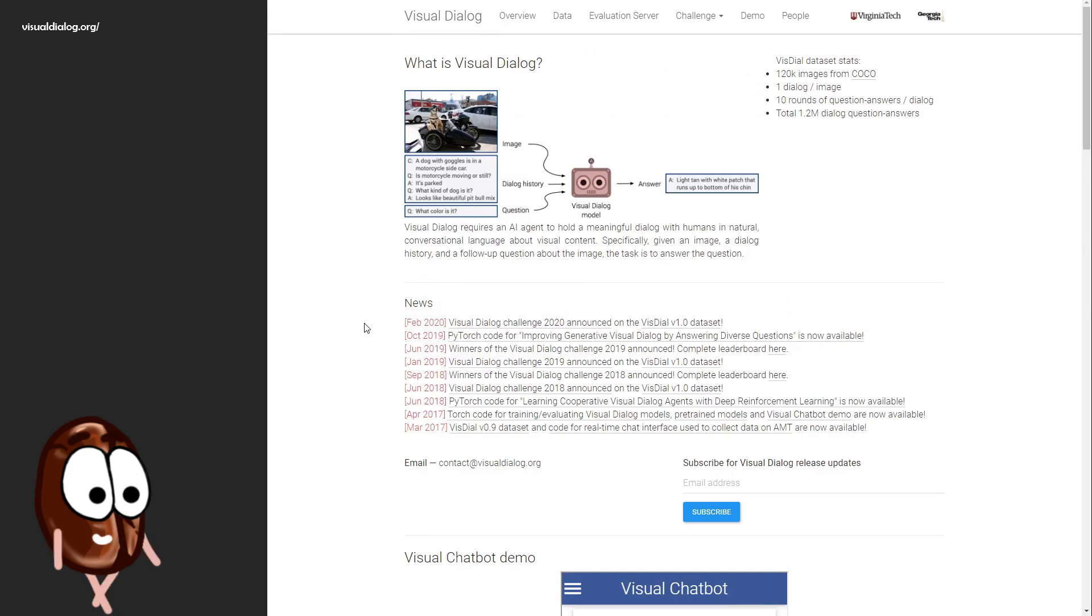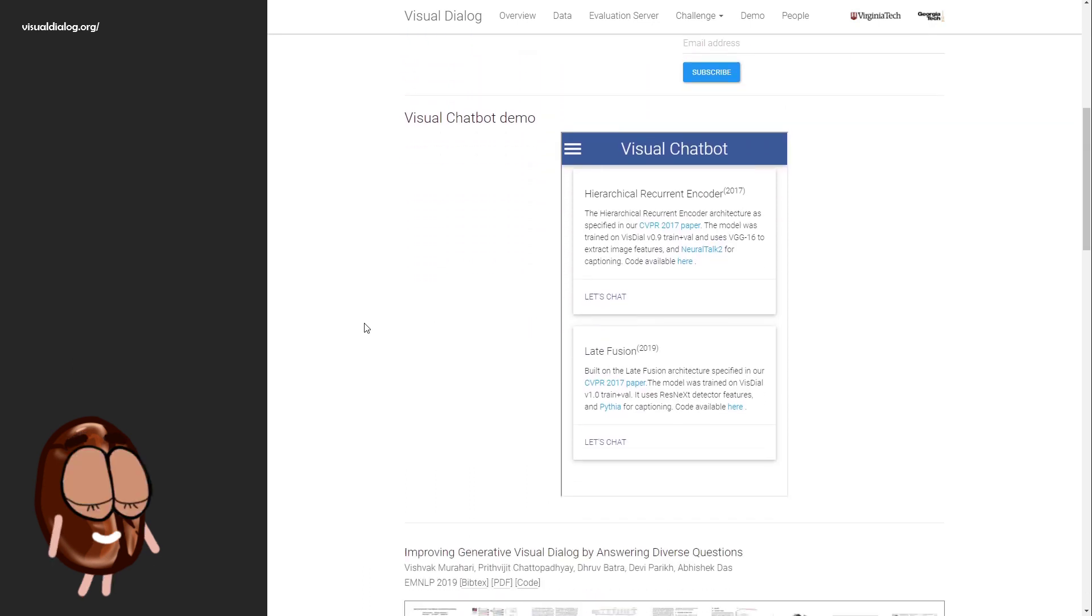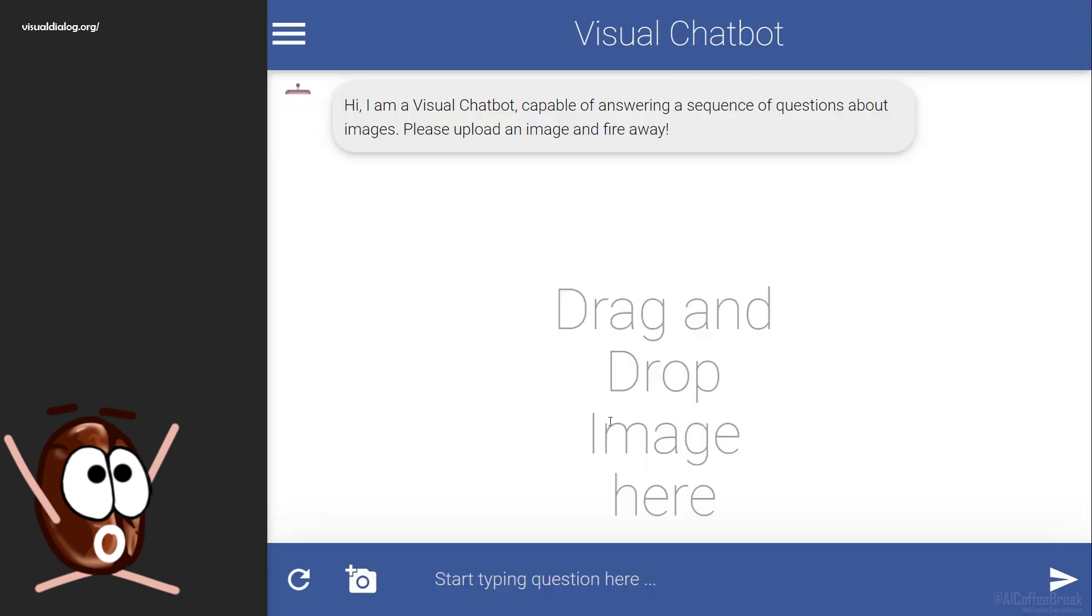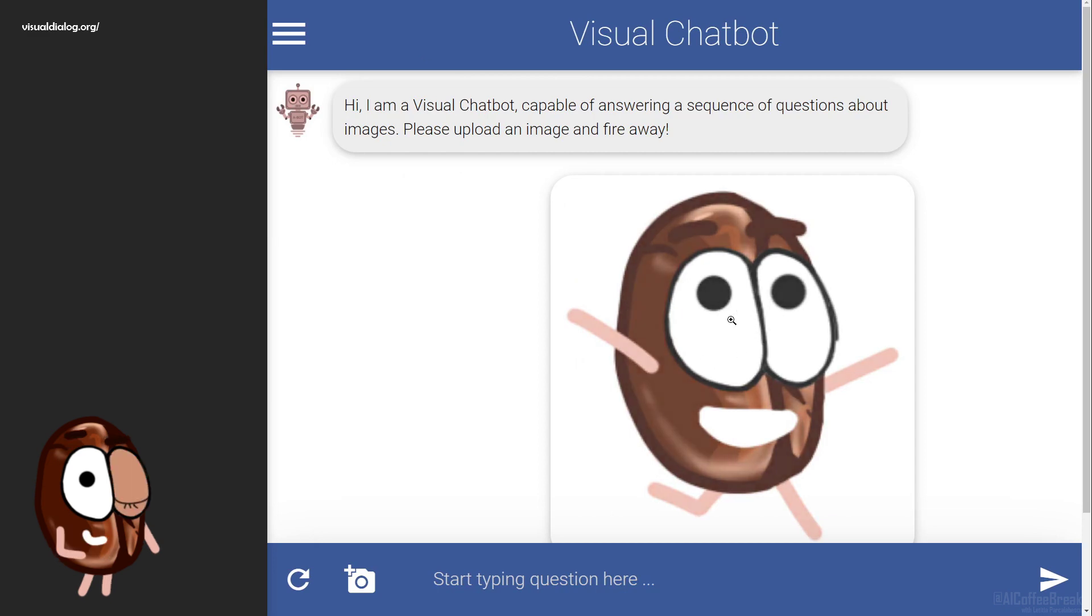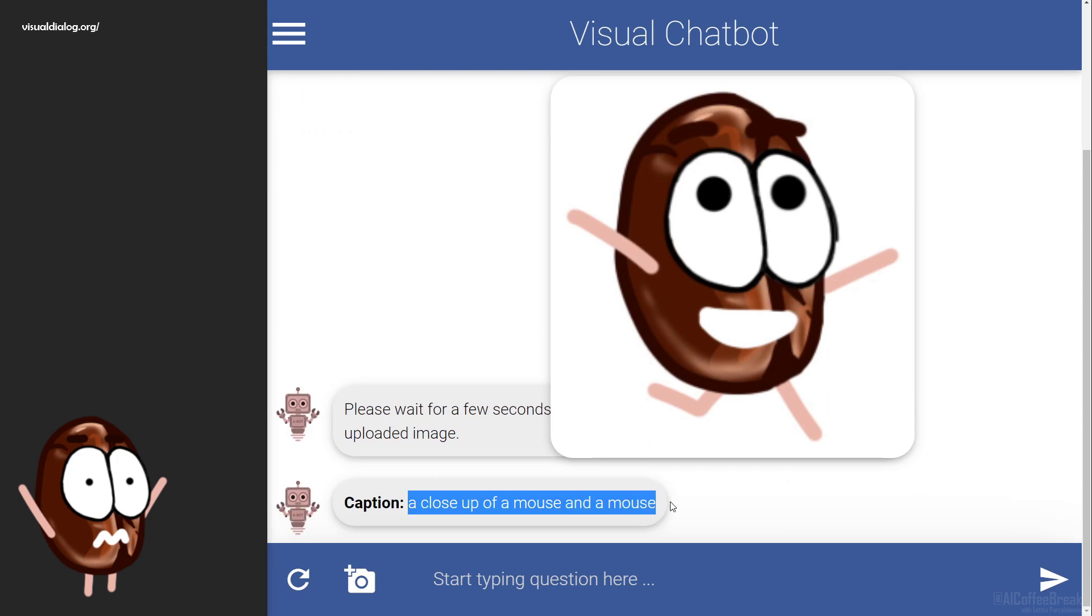One more example on Visual Dialogue, where neural systems deliver the state of the art in chatting with a user about an image. The Visual Dialogue Challenge website even comes with a Visual Chatbot demo. We have to try it out. We upload our favorite image and we see that the model thinks it is a close-up of a mouse and a mouse.